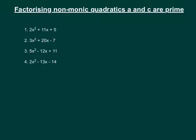So if we look at the first one, in all of these examples, A and C are both prime numbers. And if they're a prime number, the only factors are 1 and itself.